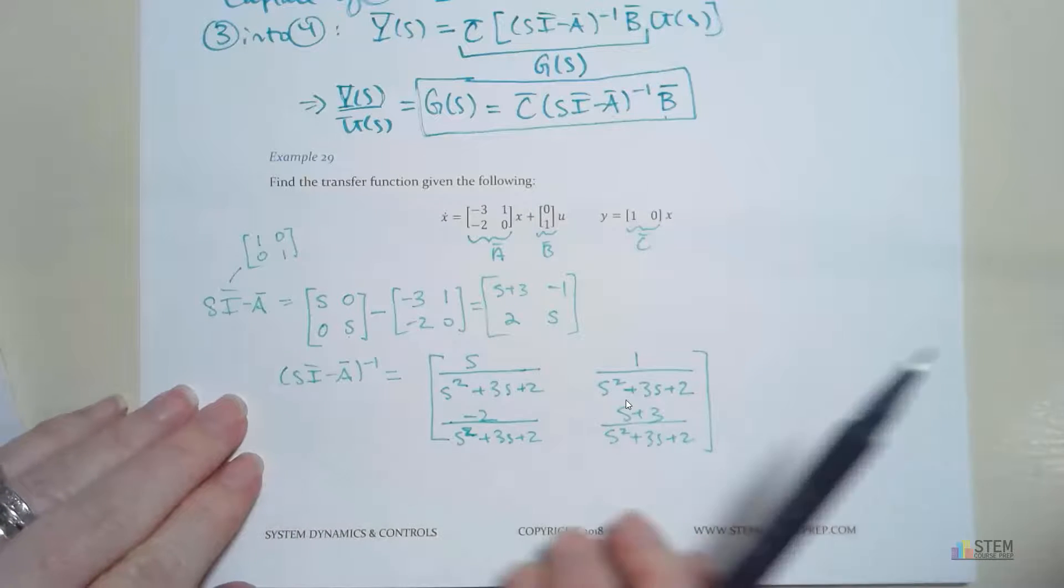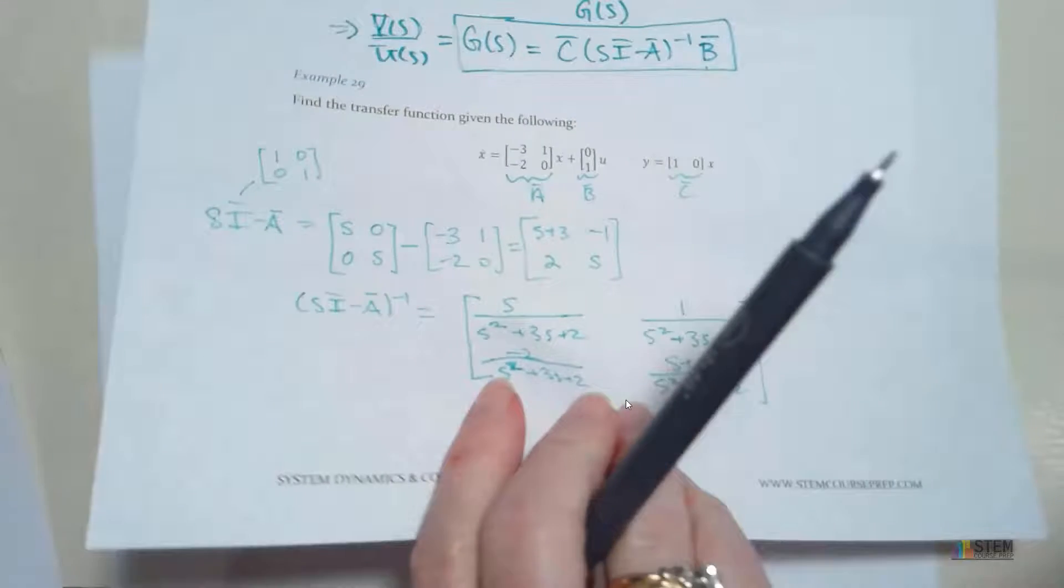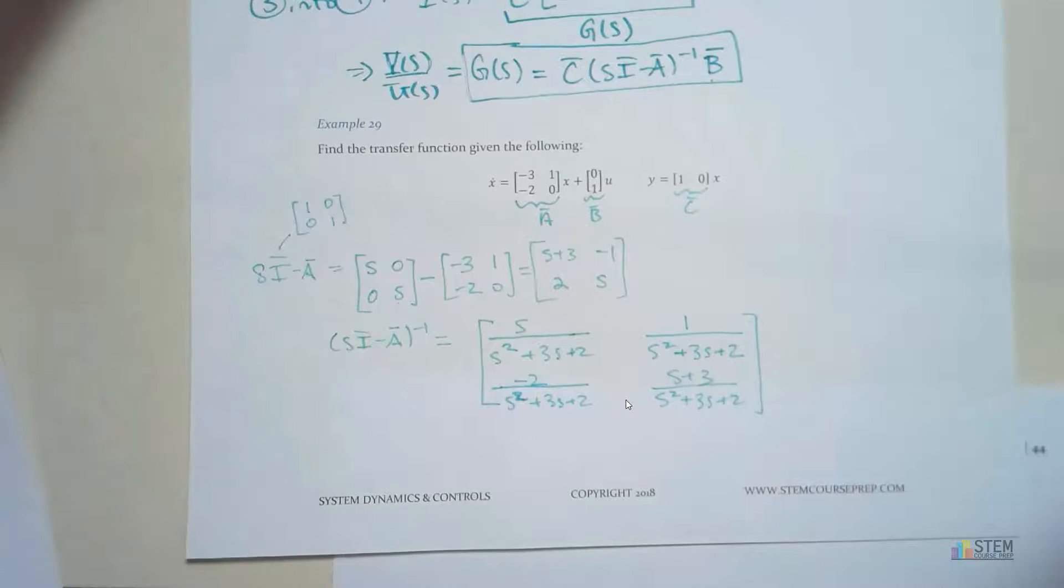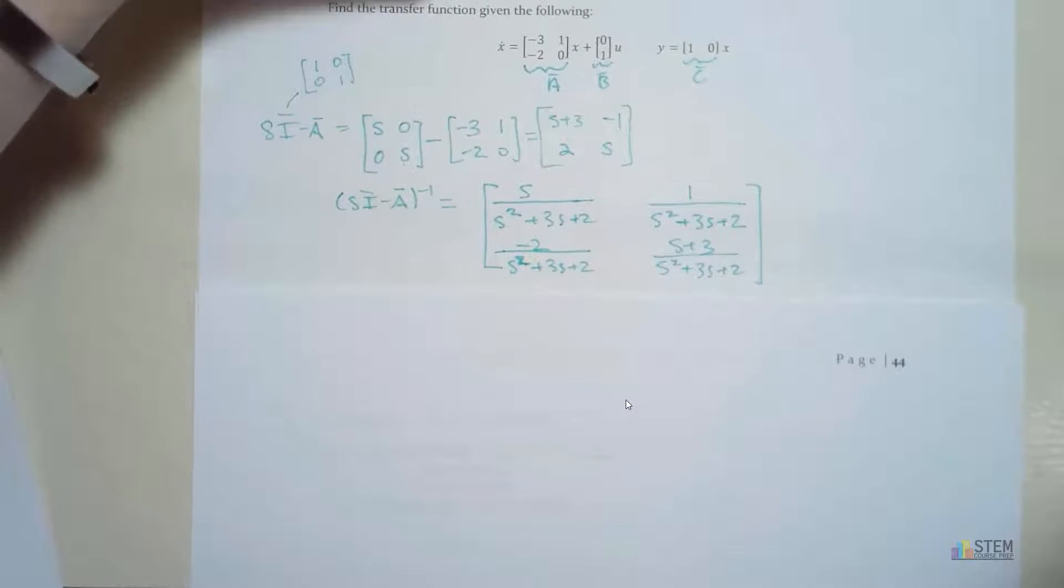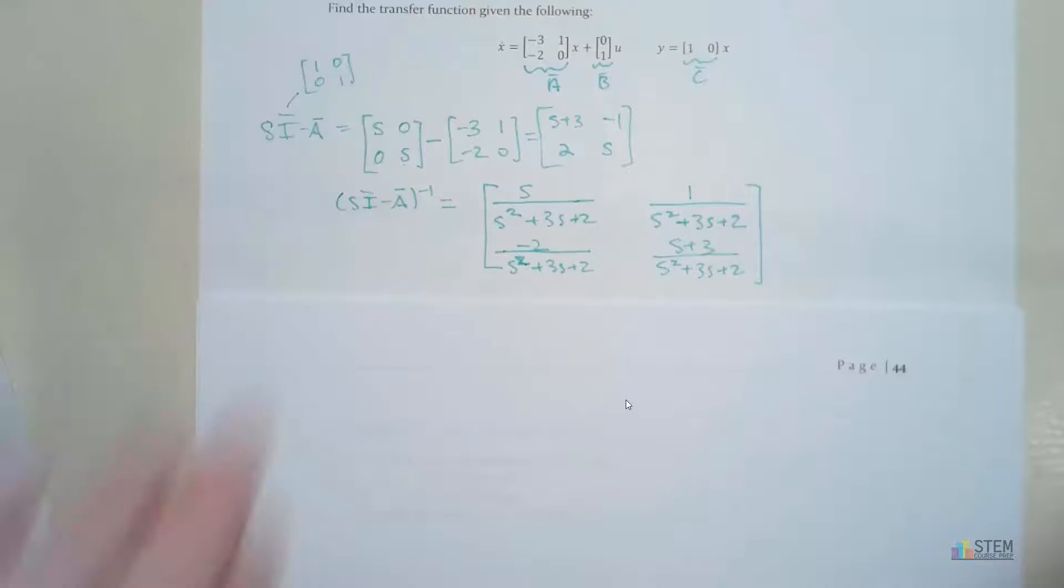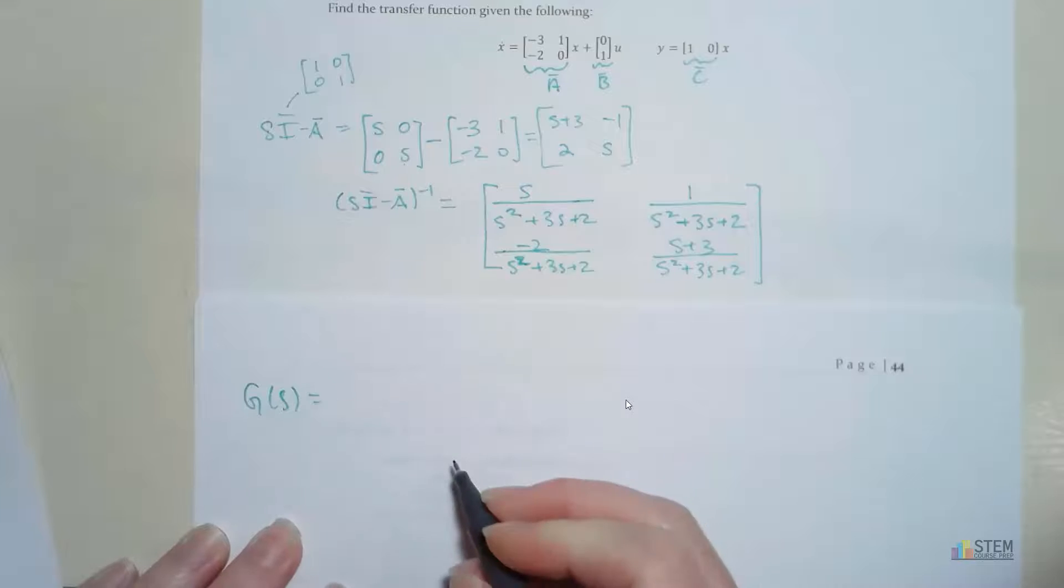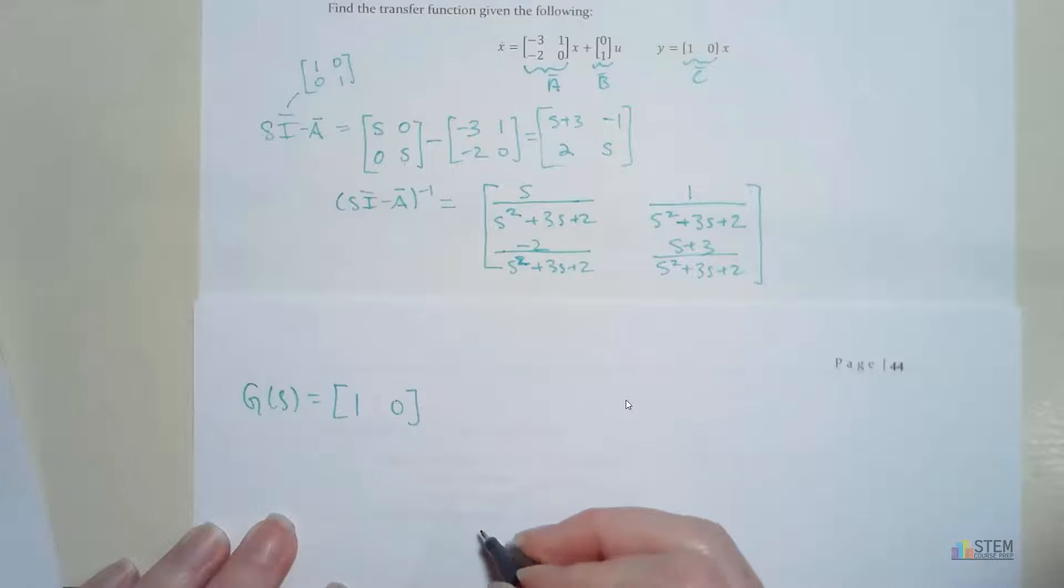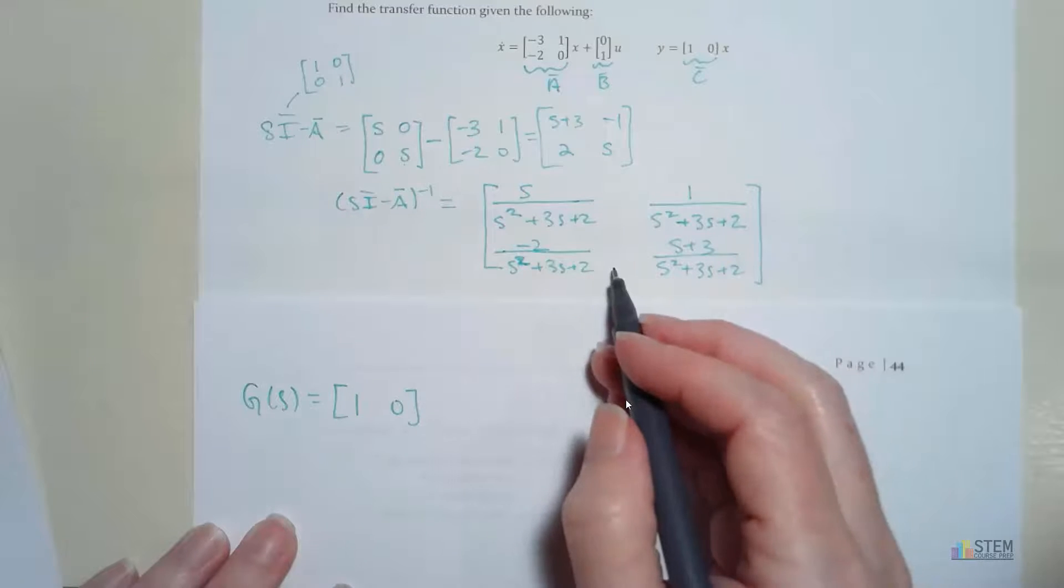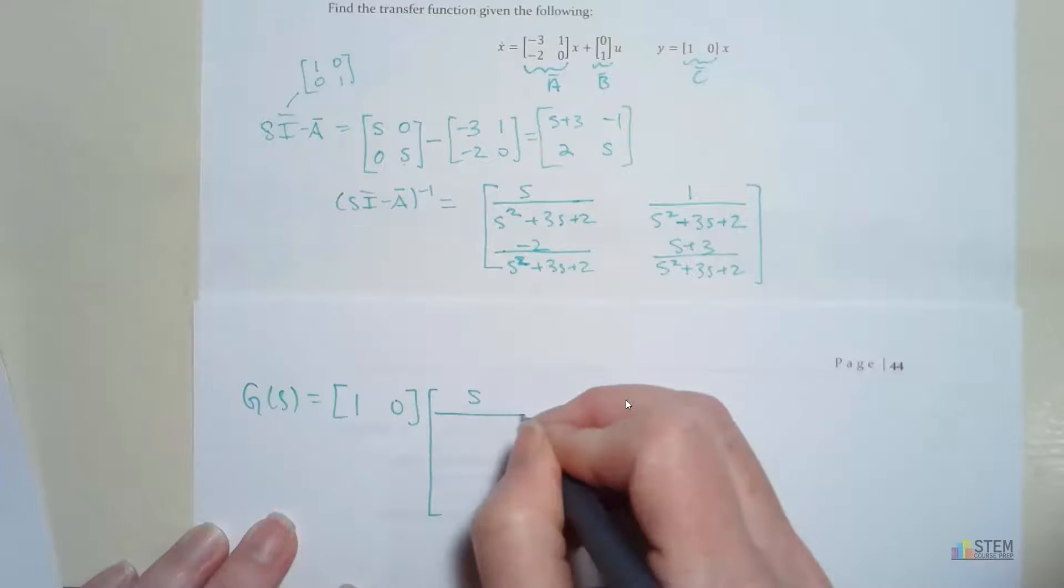Now what we need to do is finish this calculation. We've got to multiply by C and B. Let's see what we get. Let me get to another page. So now let's write out what we're going to do. g(s) is going to be C, which is this row vector with [1, 0], and then we're going to have this inverse that we just found.